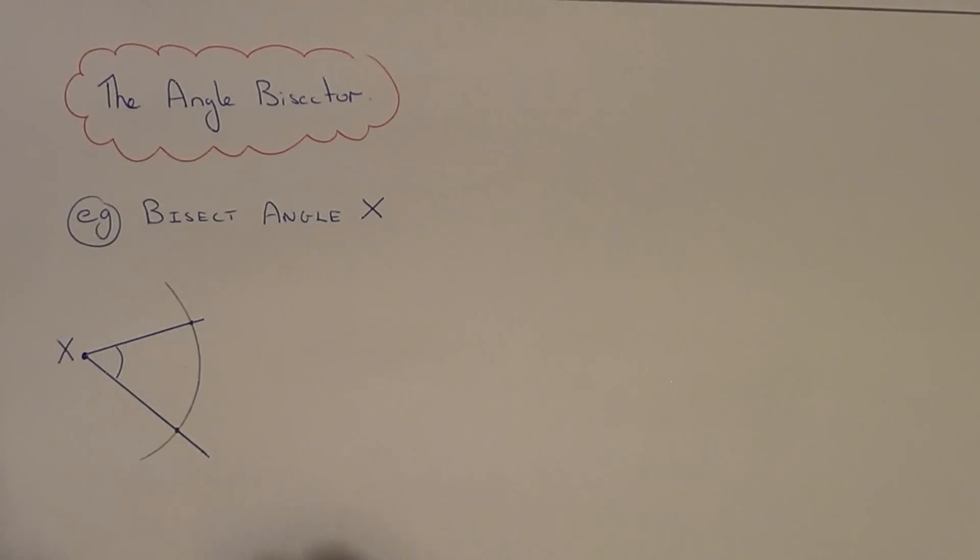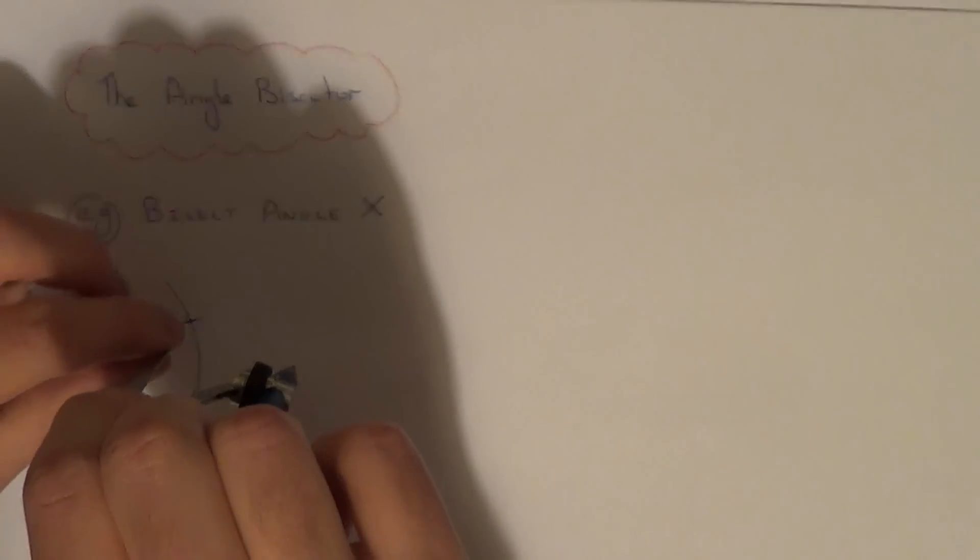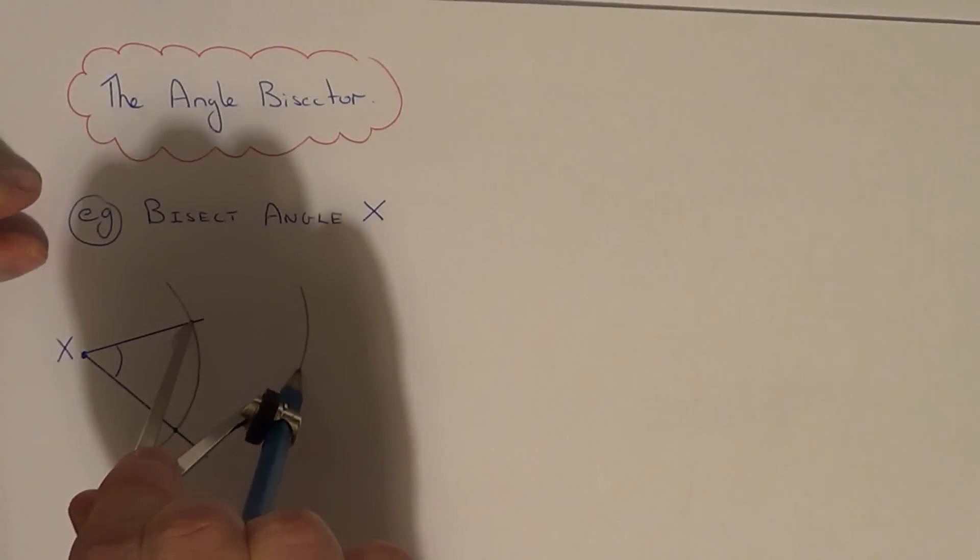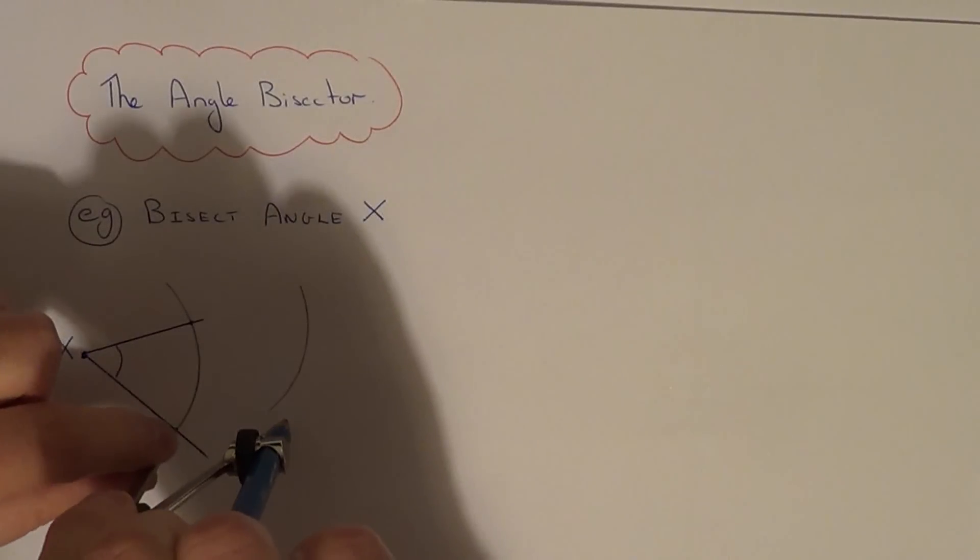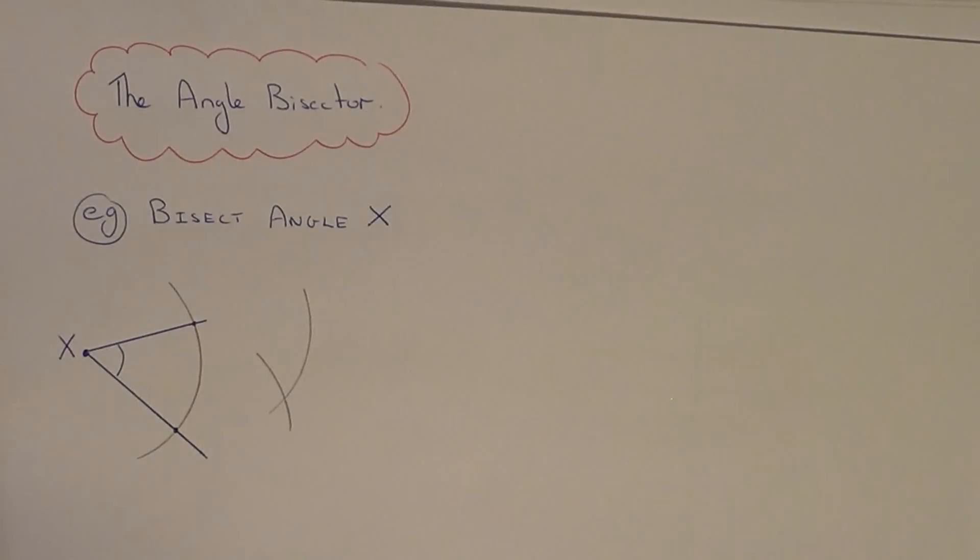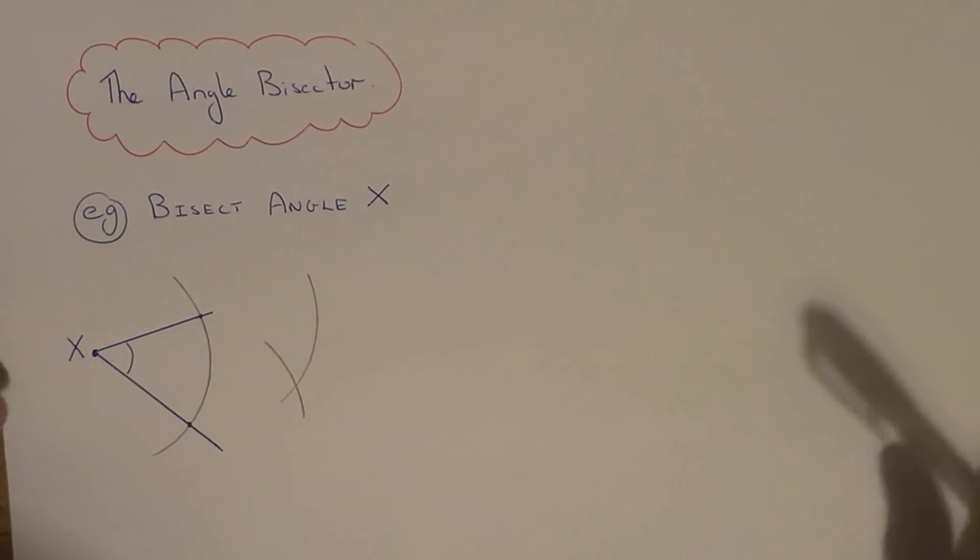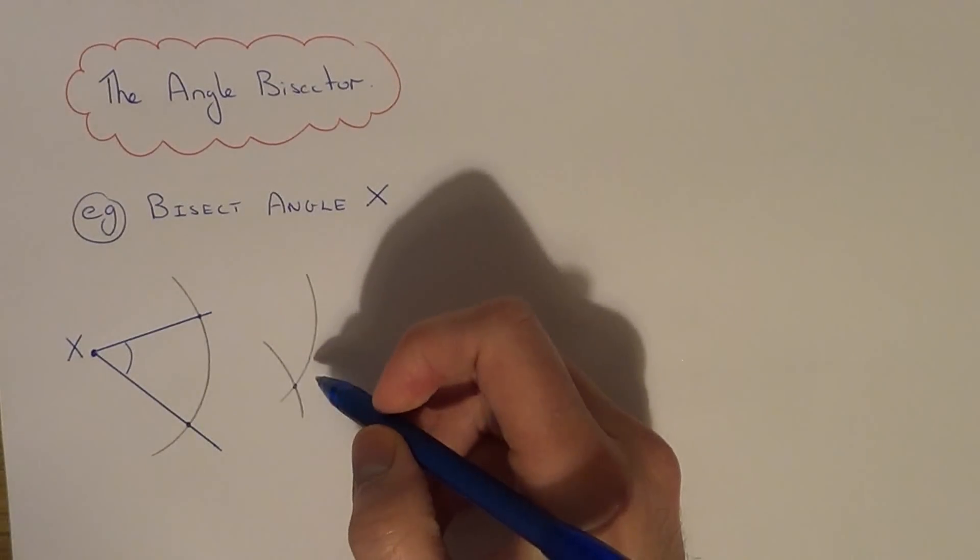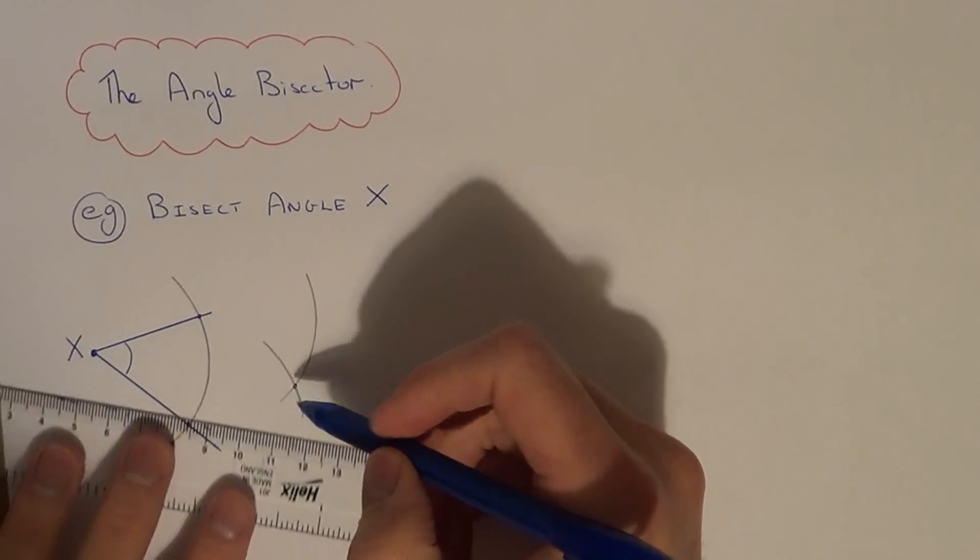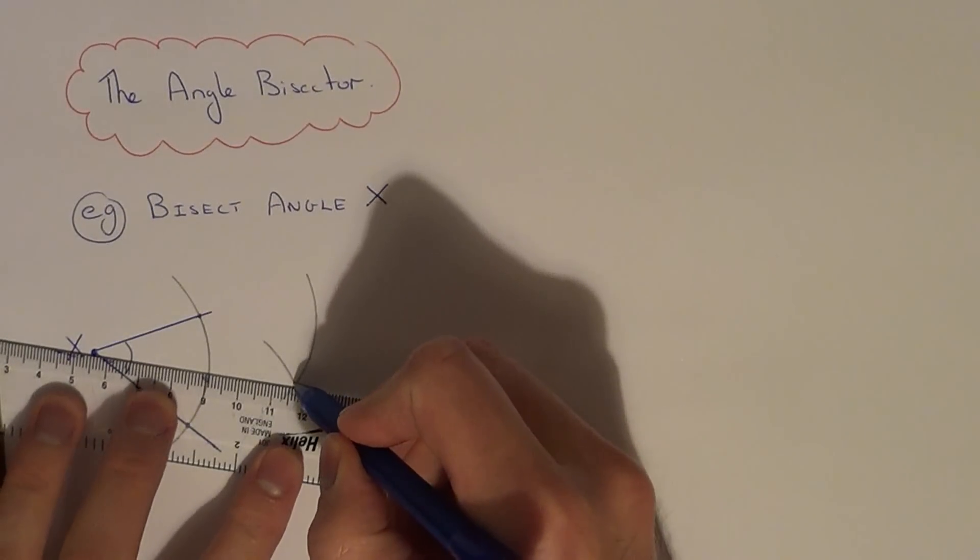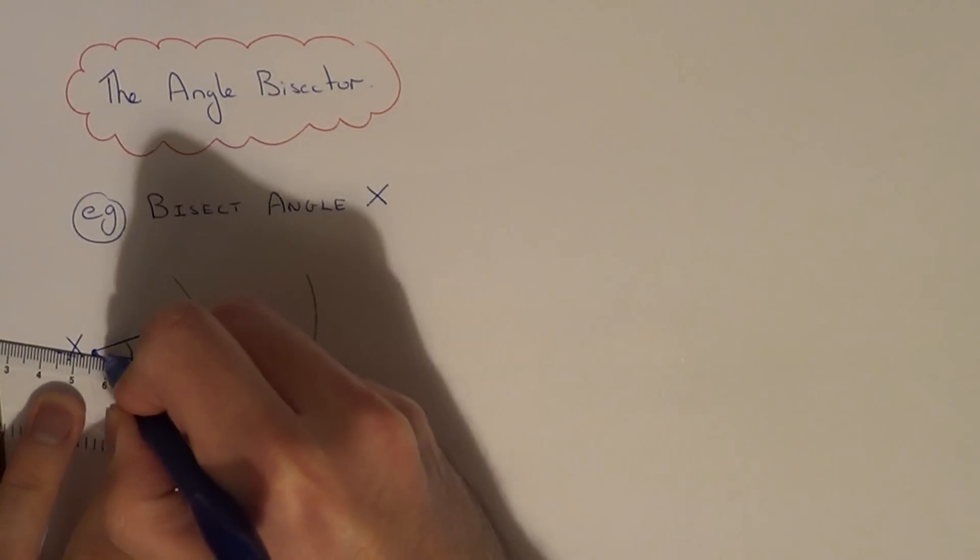So what you do next is move your compass to these two new points and do a further two arcs. And what you'll get is another intersection point here. All we need to do now is draw a line back from this intersection point back to the centre of the angle.